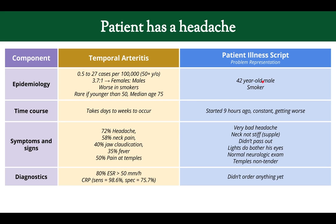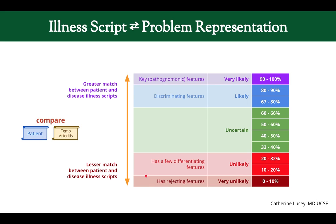There are other mismatches too: the headache started nine hours ago, much faster than the days to weeks typical of temporal arteritis, and the patient is male while the disease is more common in females. Based on these rejecting features, I'd place this in the very unlikely category — perhaps 10% risk of temporal arteritis.